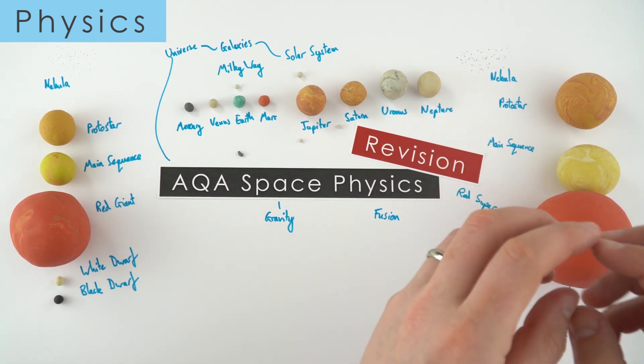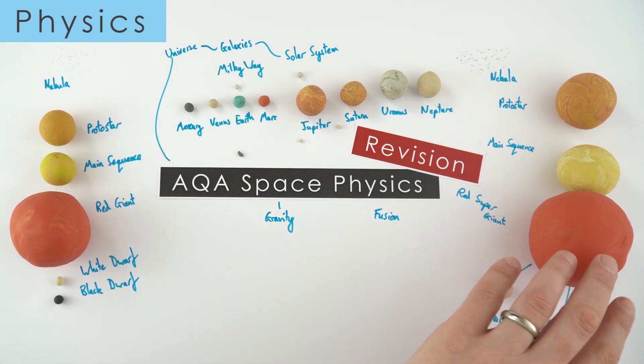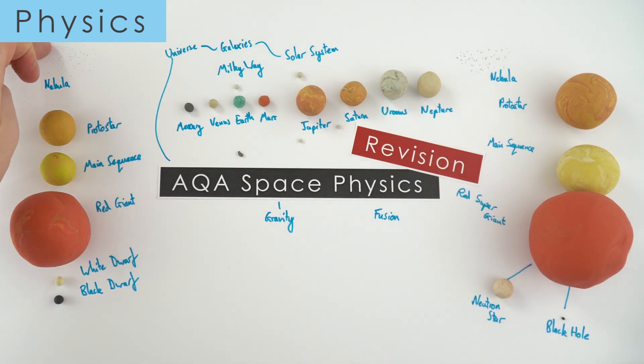Now when the supernova happens it distributes these elements throughout the universe which then might end up making another nebula, and then that forms maybe the star in the center of a solar system as well as the material for the planets. So you've been formed in one of these supernovas.